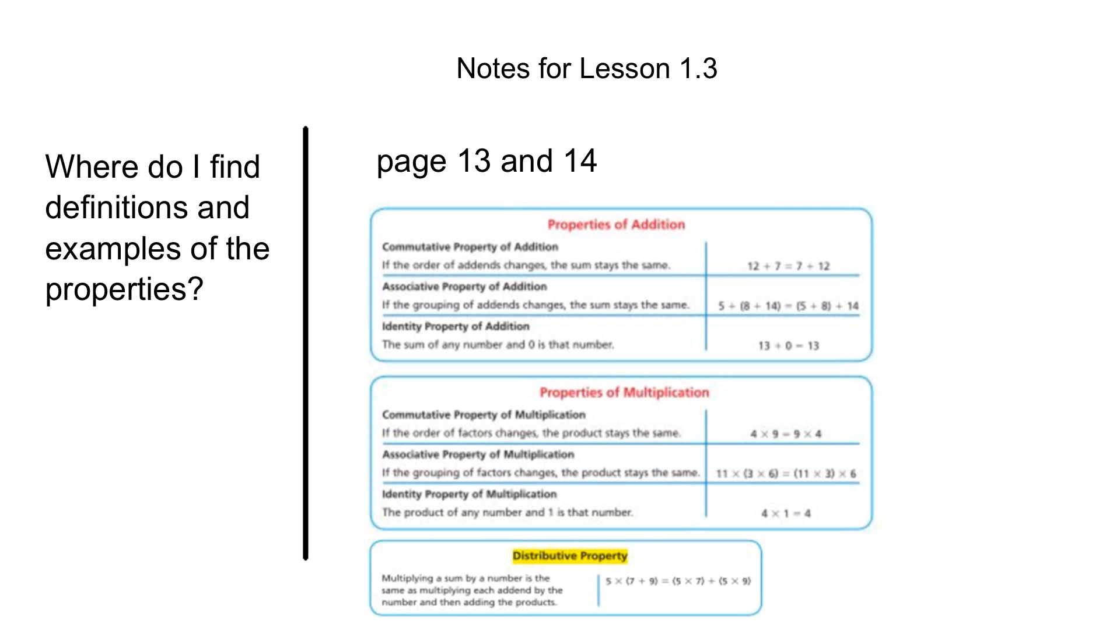Here are the notes for lesson 1.3. And really, it's just where in the book do I find the examples of the properties? And they're on page 13 and 14. So write this note, but don't copy all of this down. Just have it ready when the video is playing and you are working through the problems so that you know where to go to see examples of the commutative property, associative property, and so on.